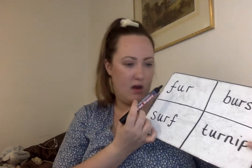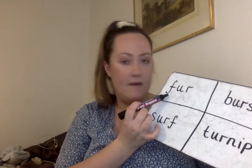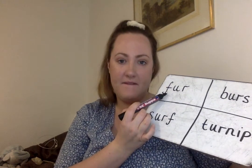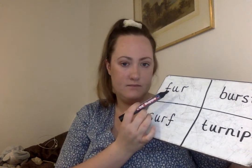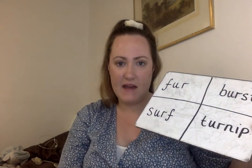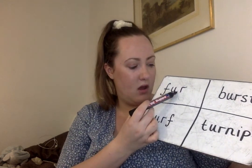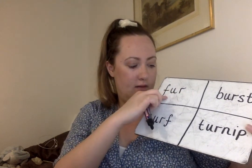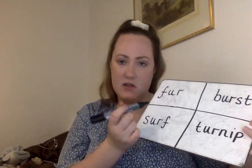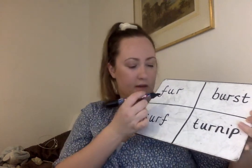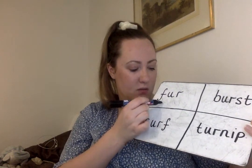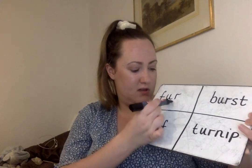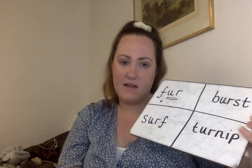The first word is F-U-R. Can you use your robot arms to sound it out? F-U-R is 'fur.' Let's see if we can do the sound buttons. For F-U-R, we would do a bean for F, and a sausage for U-R because it is a digraph.